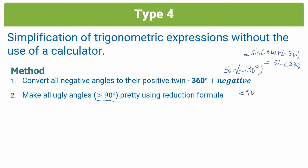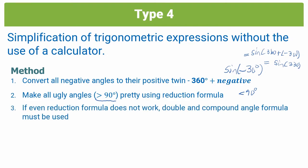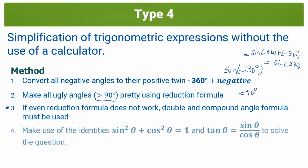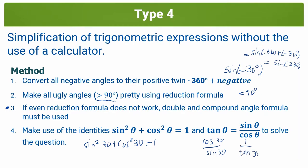Step 2: all ugly angles — any angle greater than 90 degrees — need to be converted into pretty angles using reduction formula, making them less than 90 degrees using supplementary or complementary reduction formula. Step 3: if you can't use reduction formula, resort to double and compound angle formulas — this step is exclusive to grade 12. Step 4: make use of the identities: sine squared theta plus cos squared theta equals 1, and tan theta equals sine theta over cos theta. For example, sine squared 30 plus cos squared 30 can immediately be replaced with 1 — that's your Pythagorean identity.